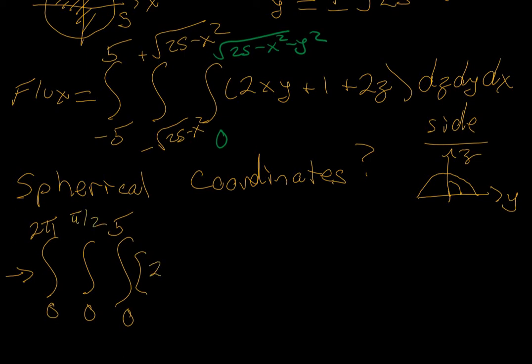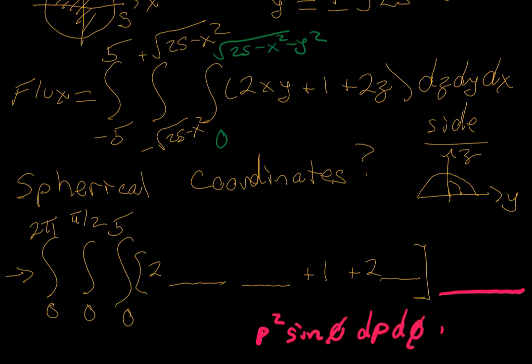We have 2 times x times y plus 1 plus 2 times z. And then, oh, we are going to be tight on space. Remember, what goes in this section right here, I'm going to have to squeeze down here, is rho squared sine of phi d rho d phi d theta.